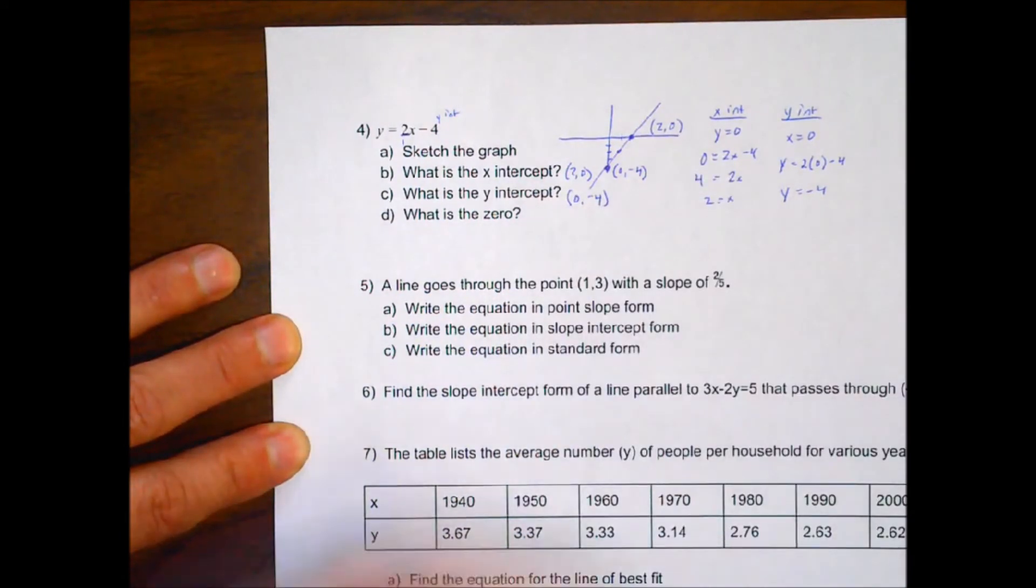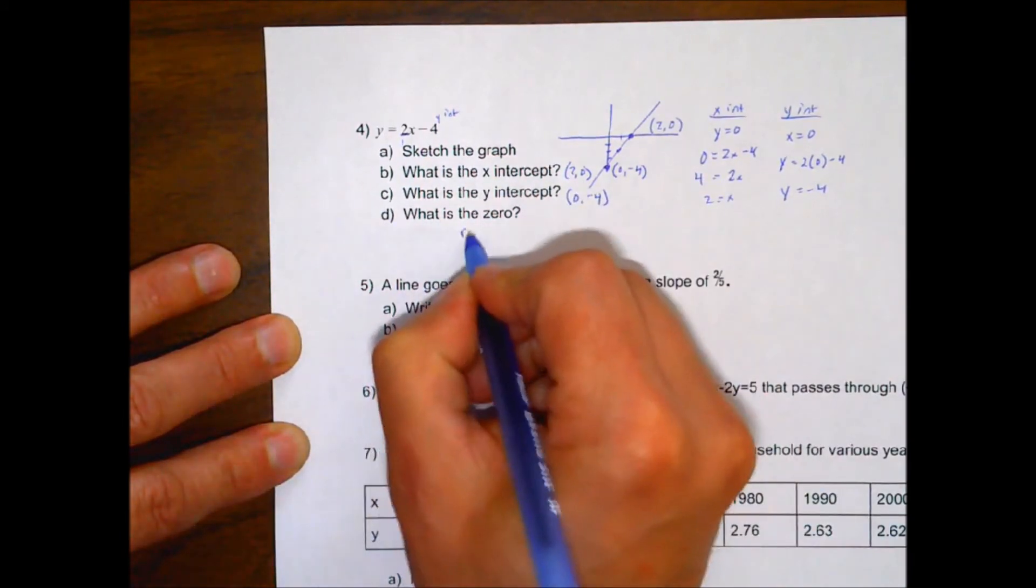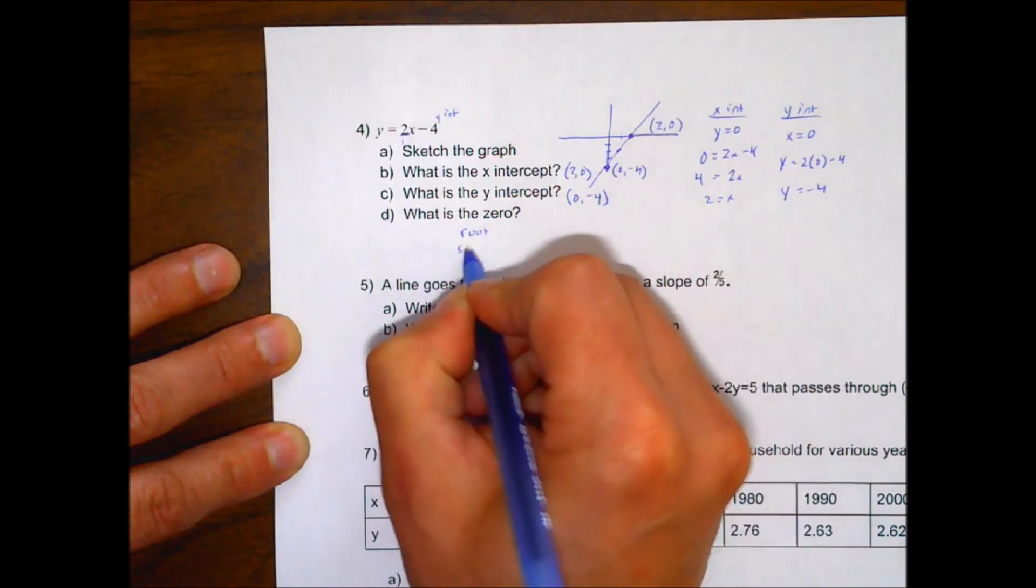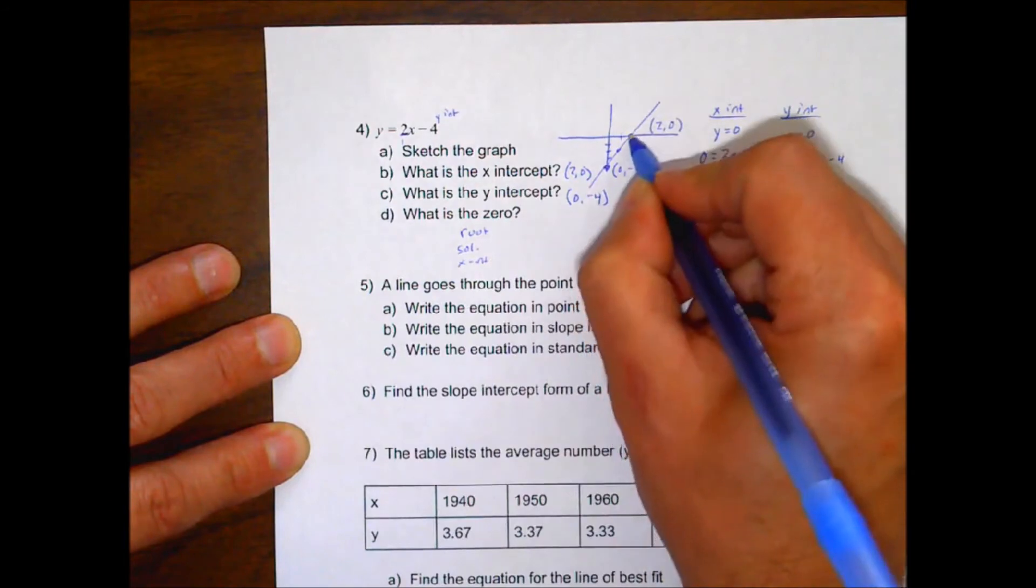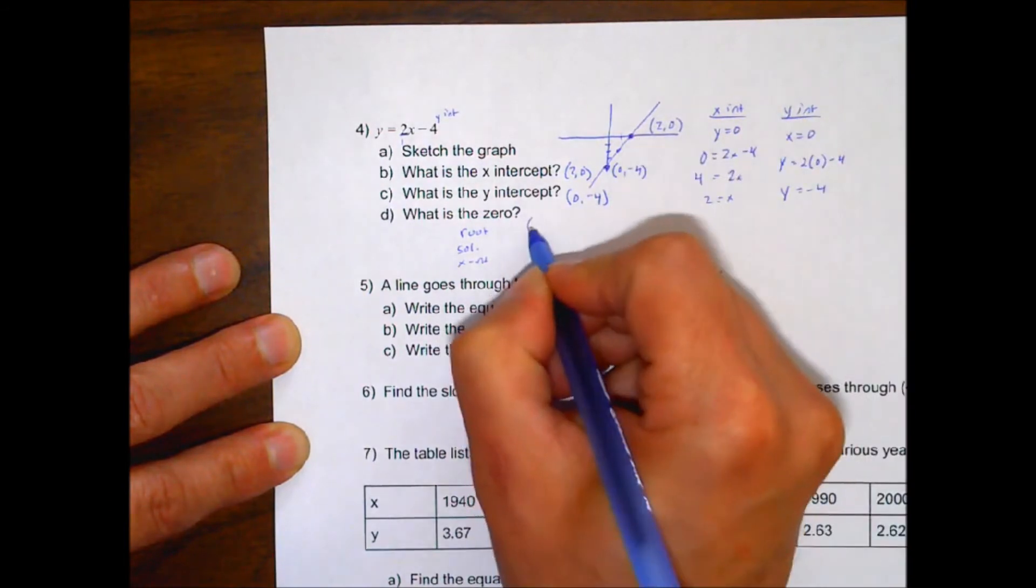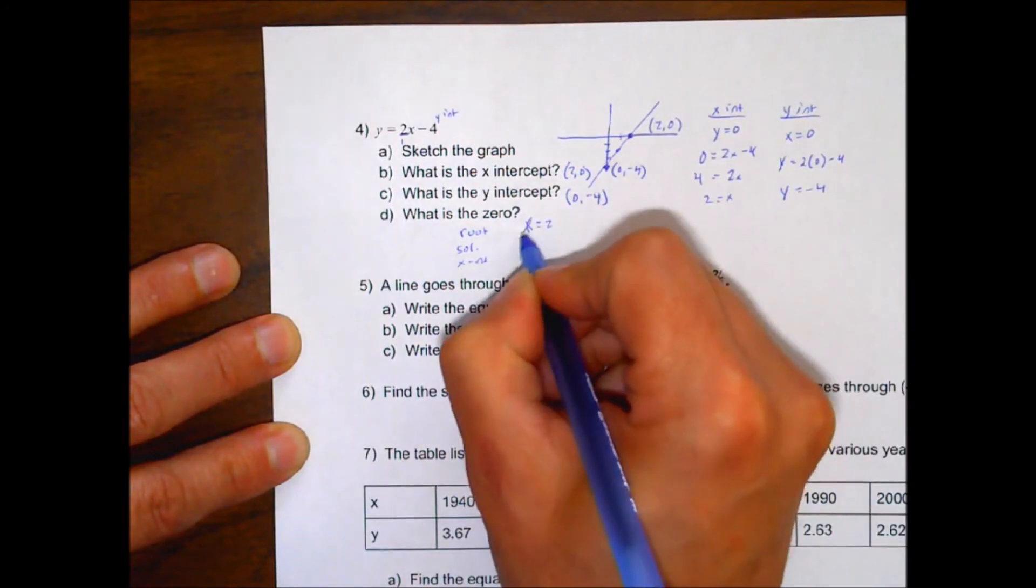The 0, also known as our root, or our solution, or our x-intercept, it's always where it crosses your x here. So it's at x equals 2. 2 is our 0.